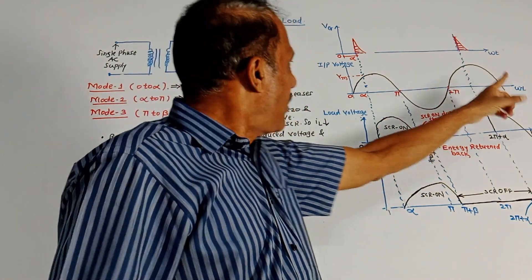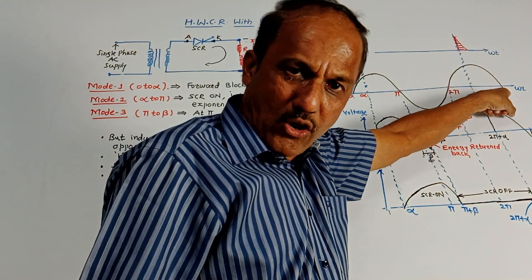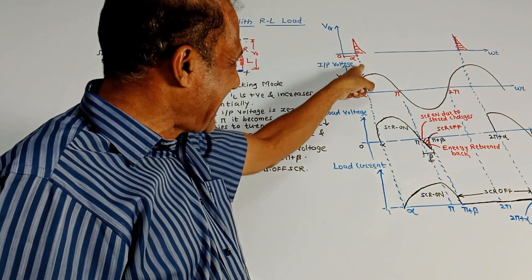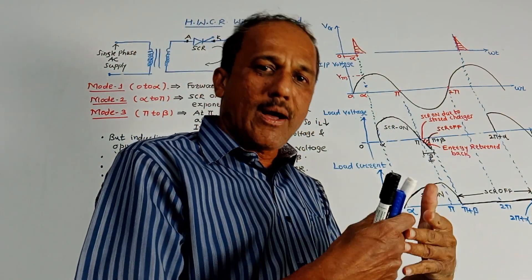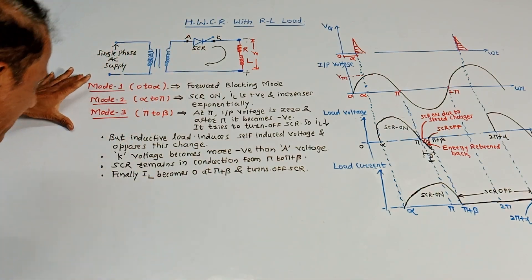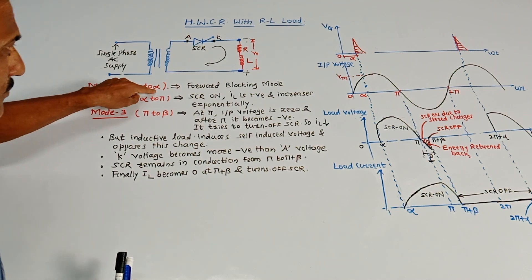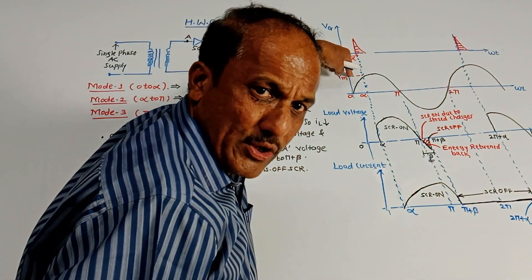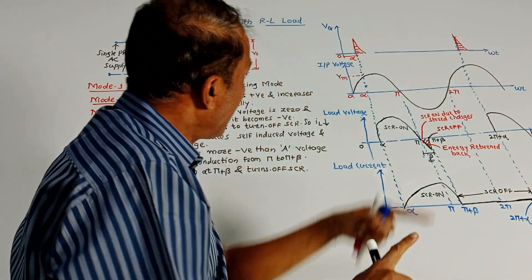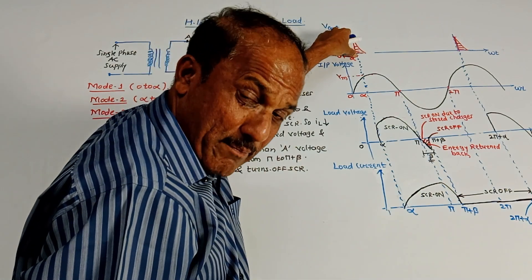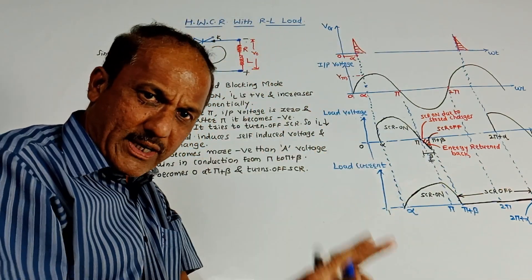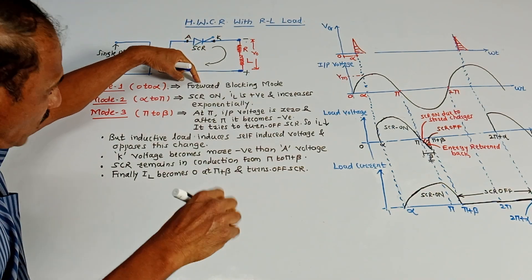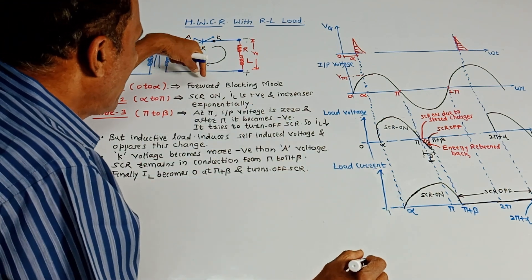This is the waveform of input voltage — an ideal sine wave. The x-axis is omega t. The value Vm represents the maximum value. Alpha is the firing angle at which we are going to apply the gate pulses. We have divided the operation into different modes. In Mode 1, from zero to alpha, positive voltage is applied so SCR will be forward biased, but the gate pulse is not applied. So from zero to alpha, SCR will not be conducting — it will be in forward blocking mode.